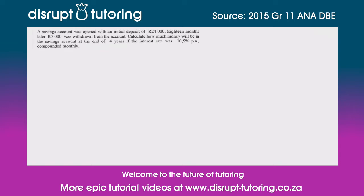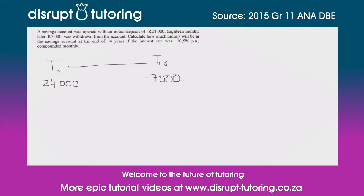They've said to us the savings account was opened with an initial deposit of R24,000. I'm going to draw a timeline here. At t0 we deposited R24,000, and 18 months later at t18 we took out R7,000 — we removed R7,000 from the account.